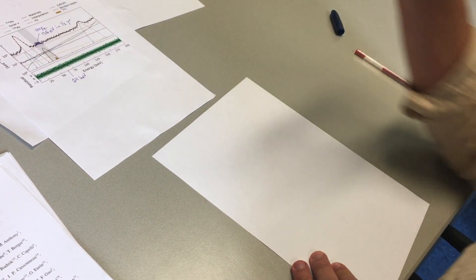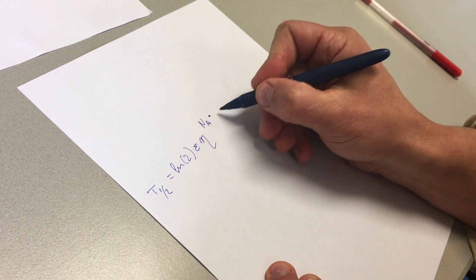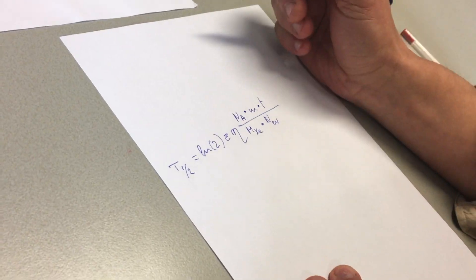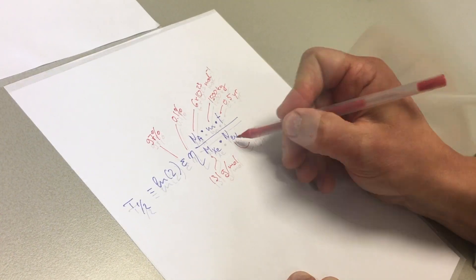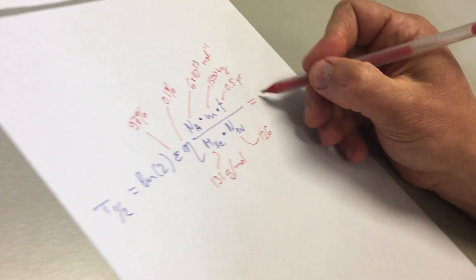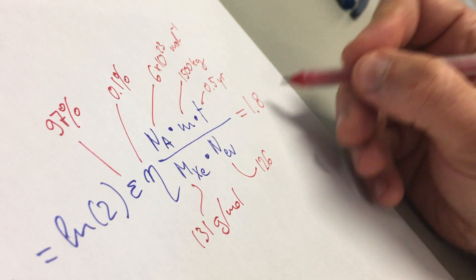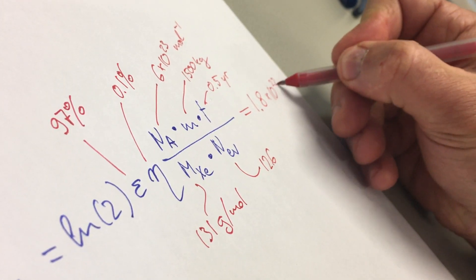And we can actually from this infer what the so-called half-life of this decay is. We know all these numbers, and the number of events that we found was 126. What you'll find is that the half-life of xenon-124 is 1.8 times 10 to the 22 years.